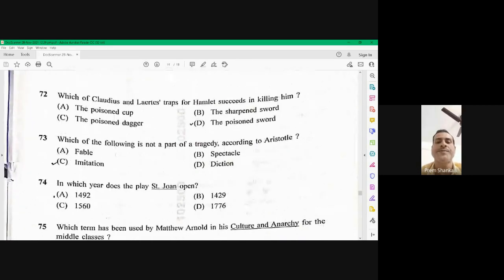Question number 72. Which of the Claudius and Laotius traps for Hamlet succeeds in killing him? So Laotius takes a poison sword and case Hamlet. So D is the right option here.